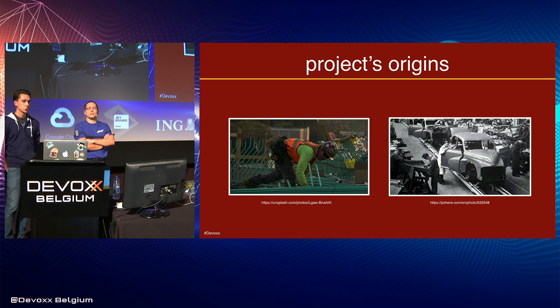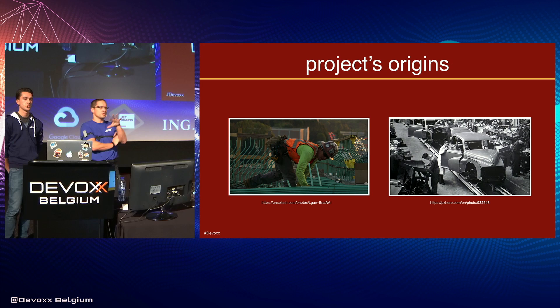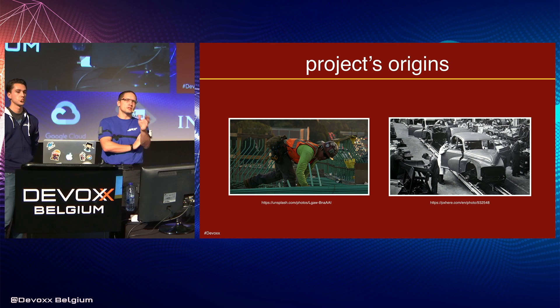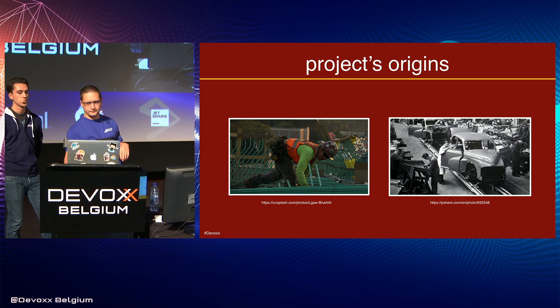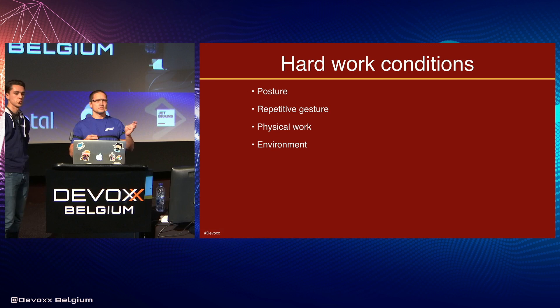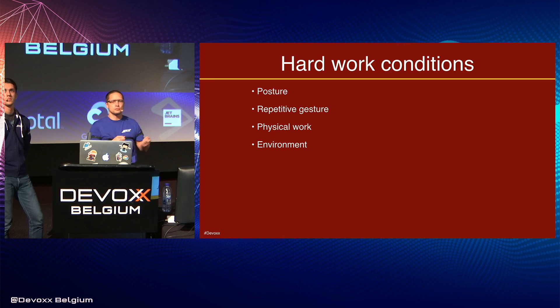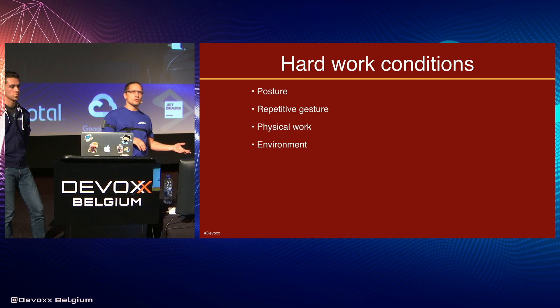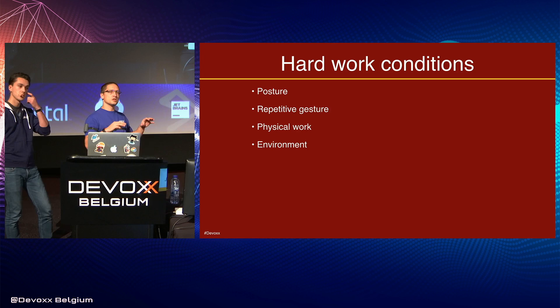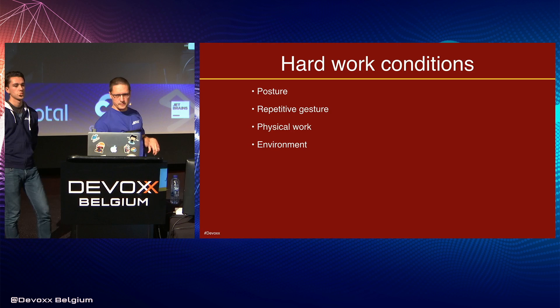This project started with a discussion with one of our industrial clients. He was thinking about the workstation configuration inside the manufacturing and they were trying to reduce the burden on the handler. Hard work conditions depend on four things: the posture — whether you have to crawl inside something to work — repetitive gestures like taking something over your head many times per minute, physical work like lifting heavy things, or the environment such as noise or temperature.